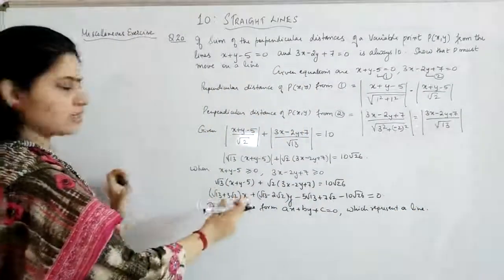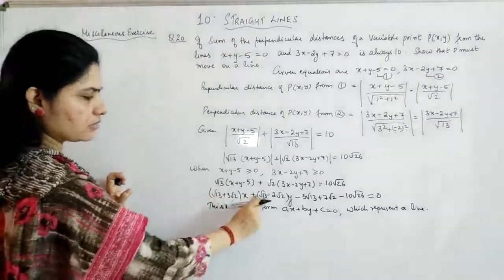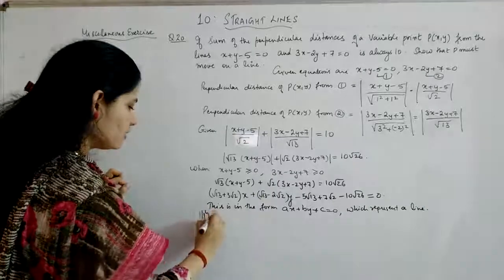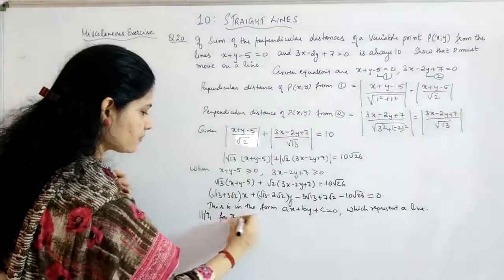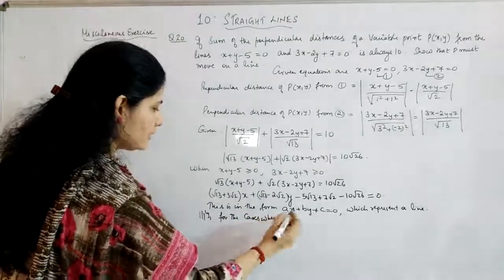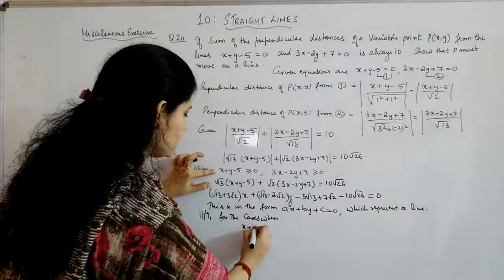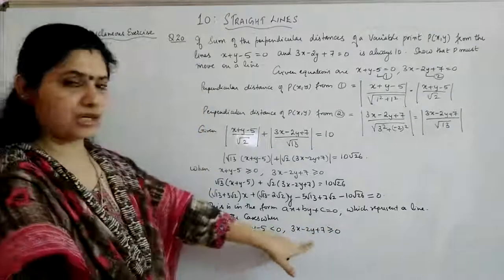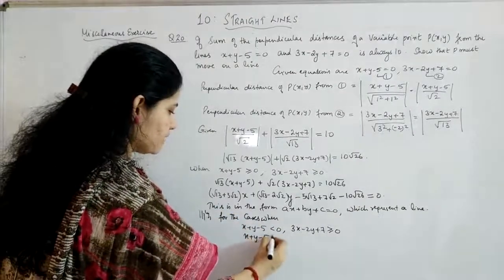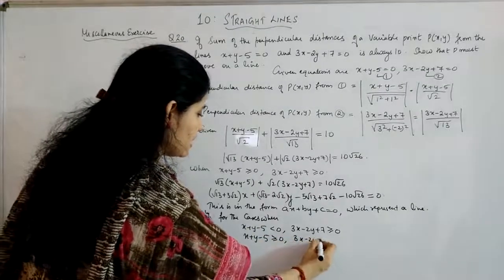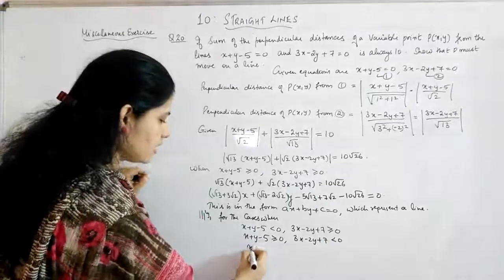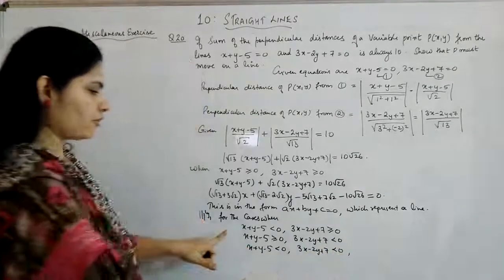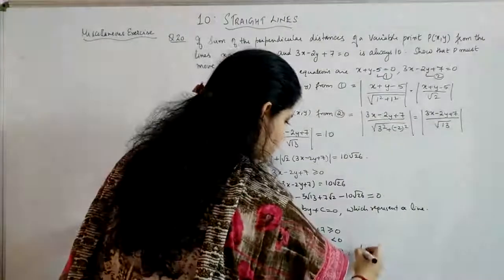For the other cases, when one or both expressions are negative, the only change is in sign, but the form remains ax + by + c = 0. Similarly, for all cases — when x + y - 5 < 0 and 3x - 2y + 7 ≥ 0; when x + y - 5 ≥ 0 and 3x - 2y + 7 < 0; and when both are negative — the result still represents a line.